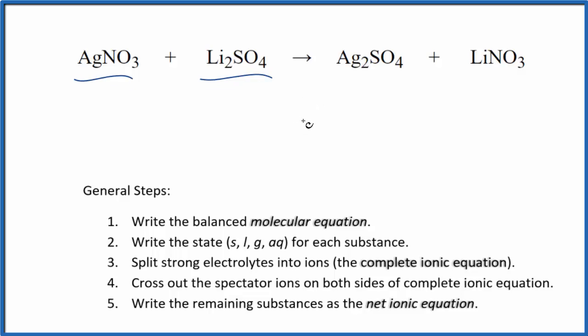So the first thing we need to do is balance the molecular equation. I have two silvers here and just one, so I'm going to put a two here. Now I have two of these nitrates and only one nitrate here. Let's put a two here. That solves the nitrates. I have two lithiums, two of these lithiums, and then a sulfate and a sulfate. So that's the balanced molecular equation.